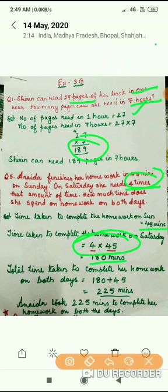She is taking 4 times more time, means 180 minutes to complete her homework on Saturday. Now, what they have asked is total time she spent on homework on both the days. Total time means we will add. When we add 180 plus 45, the answer is 225. So total time she took to complete her homework on both days is 225 minutes.